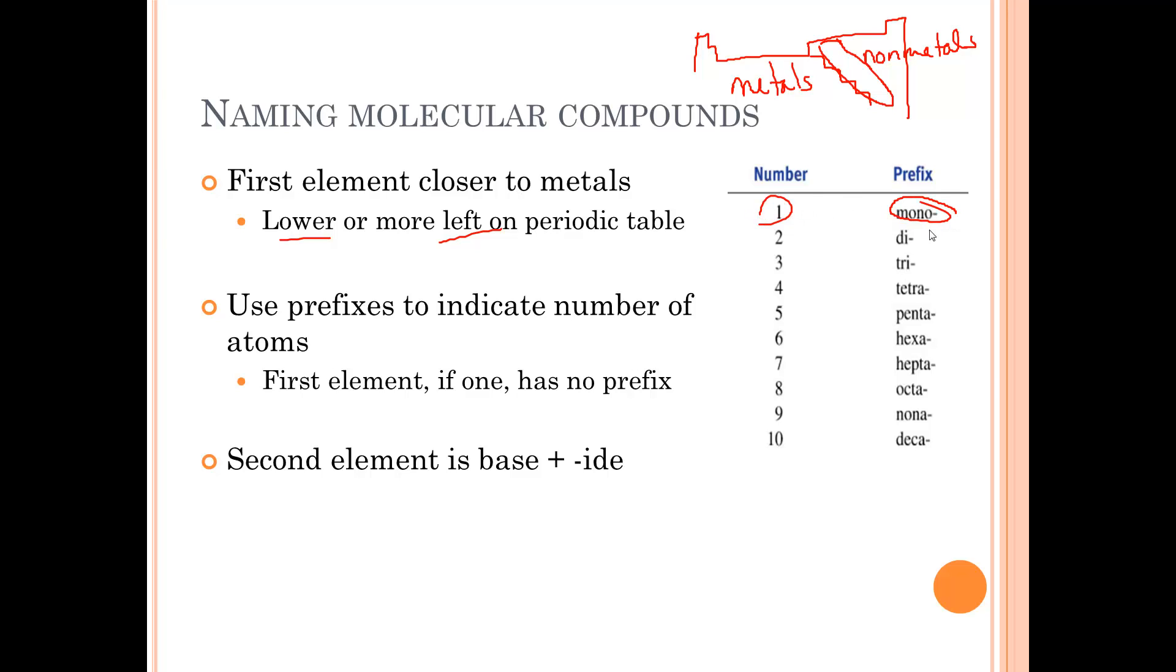And we dictate how many elements there are of each with the prefixes. Mono is one, di is two, so on and so forth. This is just something you're going to have to memorize. However, once you get to penta, it becomes very familiar because of geometry. For instance, pentagon is a five-sided shape. Penta means five atoms.